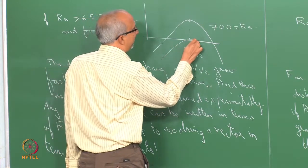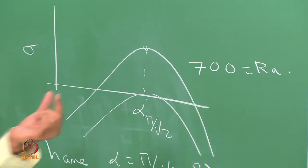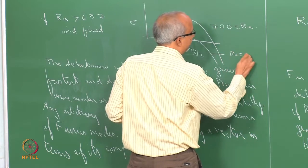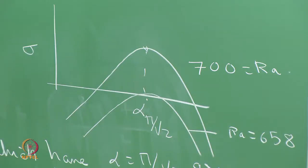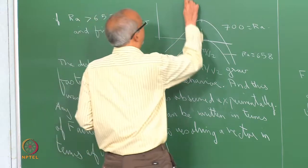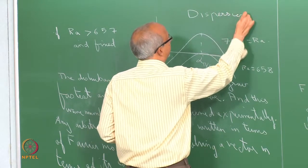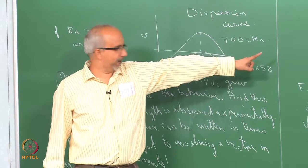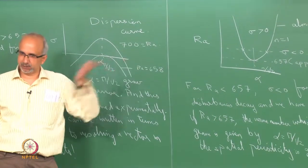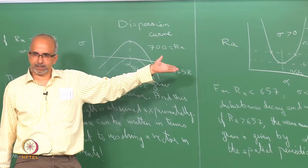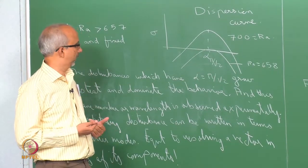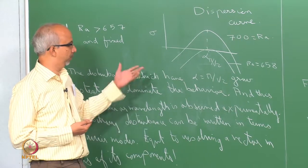For Rayleigh number equals 658, I expect a small maximum near π/√2 because only a small region around that value will have a positive sigma. A plot of growth rate sigma versus wave number alpha is called a dispersion curve, and the curve that identifies the region of stability is called the neutral stability curve. These two representations contain basically the same information.